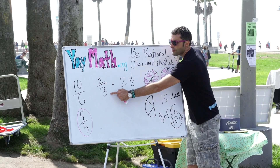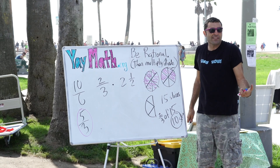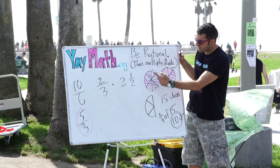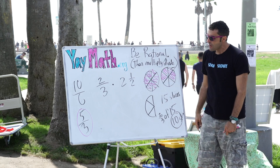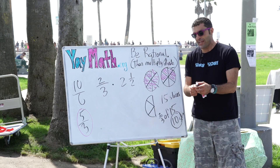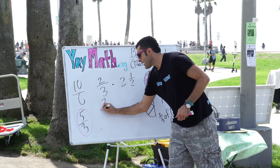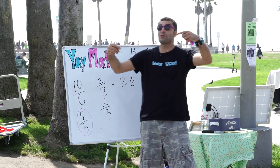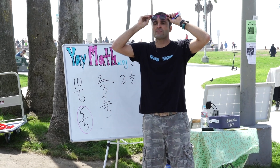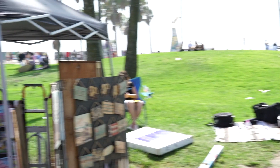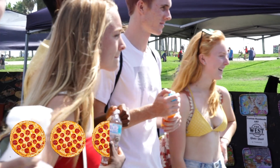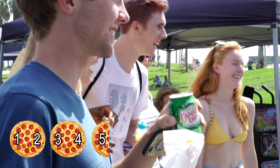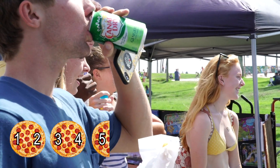I think the problem is we don't spend enough time talking about what two-thirds of two and a half actually means. We have two and a half pizzas — let's turn two and a half into an improper fraction. How many halves are in two and a half? Five halves — that's right.